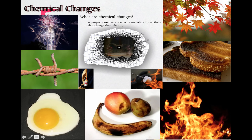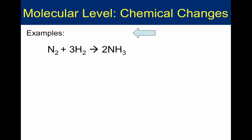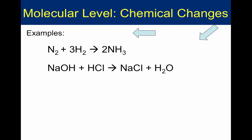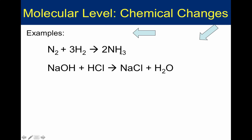Sometimes chemical changes are not so evident and are harder to see. If we could get down to a molecular level, we'd see that the reactants — the starting atoms — differ from the products after the arrow. This arrow generally implies that a chemical reaction has occurred. When your products differ from your reactants, you have a chemical change.